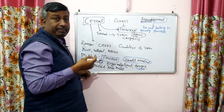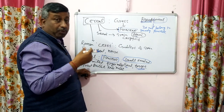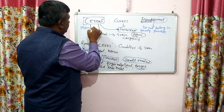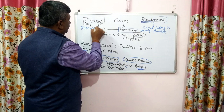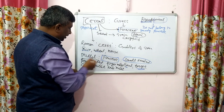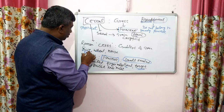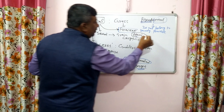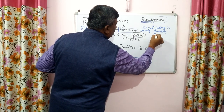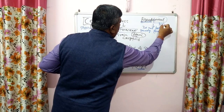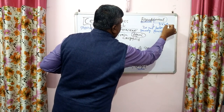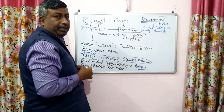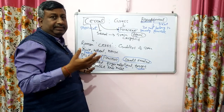Poaceae family members are monocots, so cereals are monocots. Millets are also monocots, belonging to family Poaceae. But pseudo cereals are dicot plants, yet they are used as cereals — their grain is used as food, just like true cereals.